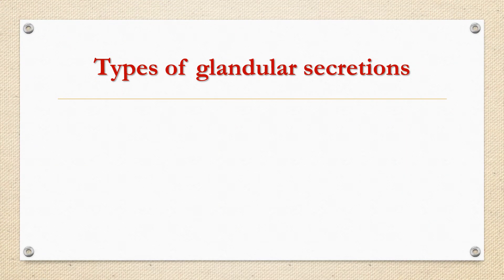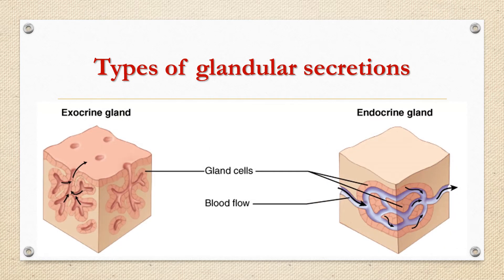Starting with some basics, according to the ways of secretions, the glands may be of two types: exocrine and endocrine. Exo means external secretion and endo means internal secretion. By definition, exocrine gland means pertaining to the secretion of a substance out through a duct to the external environment, for example salivary gland, sweat gland, etc.